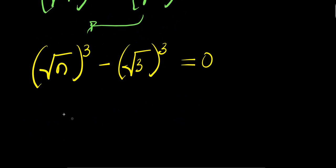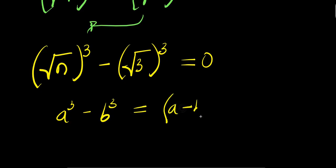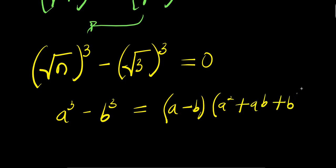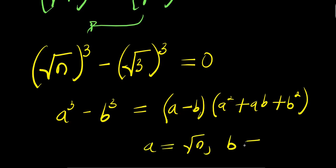Now if you have a cubed minus b cubed, this equals (a minus b) times (a squared plus ab plus b squared). Right now a is square root of n, and b is square root of 3.